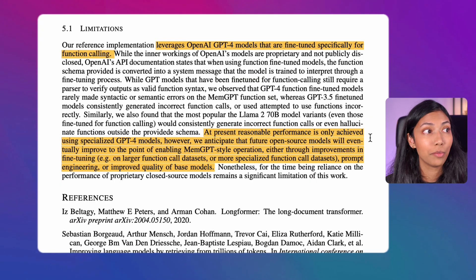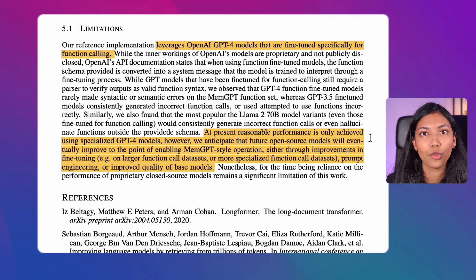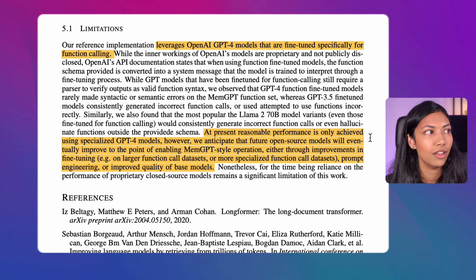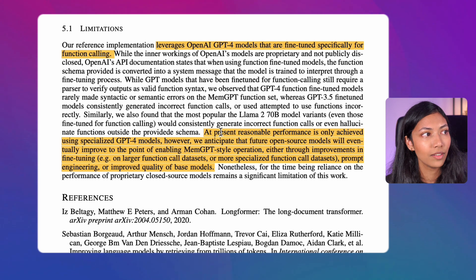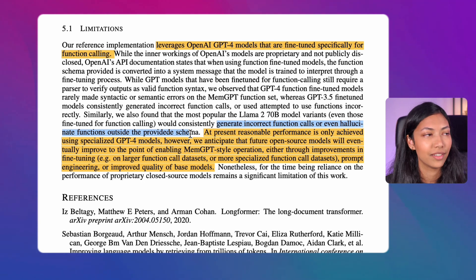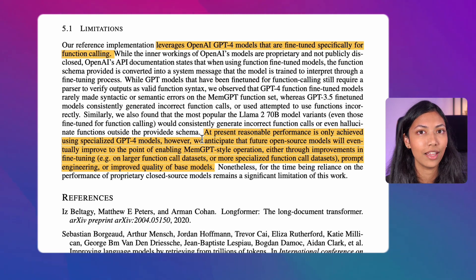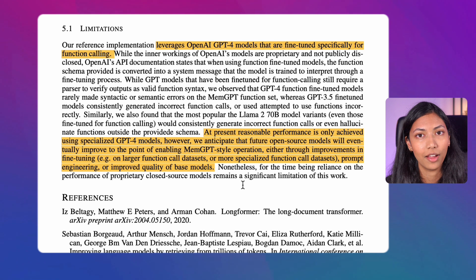Looking at limitations mentioned in the paper: MemGPT leverages OpenAI's GPT-4 models fine-tuned specifically for function calling. Although they tested similar LLMs like LLaMA-70B fine-tuned for function calling, those didn't perform as well — generating incorrect function calls or even hallucinating functions outside the provided schema. The researchers conclude that to get the most reasonable performance, you need to use GPT-4 models, though this could improve in the future with better open-source models handling function calls.